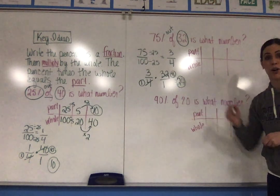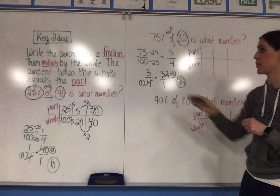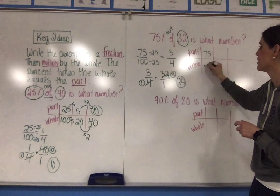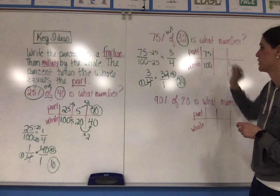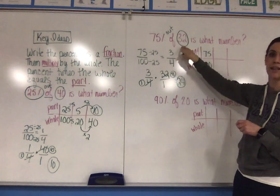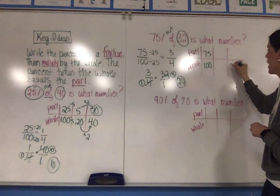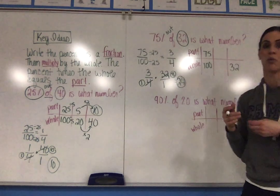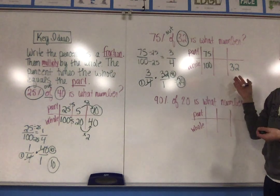I'm going to find that same part by using my ratio table. Again, I take 75 over 100, which is my part. My goal is to get a denominator of 32. I can look at 32 and know that I cannot divide 100 by a whole number that gives me exactly 32.